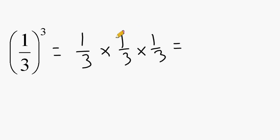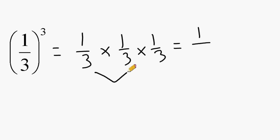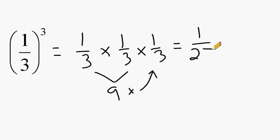For the numerator, we have all ones straight across, and when that happens the product will always result in the number 1. On the bottom, we have 3 times 3, which is 9, and 9 times 3 gives us a product of 27. So 1 third to the third power is equal to 1 twenty-seventh.